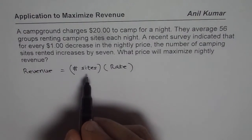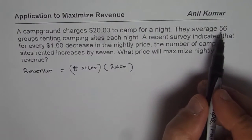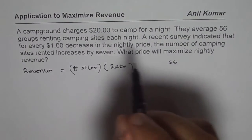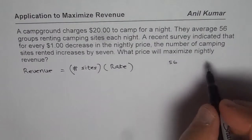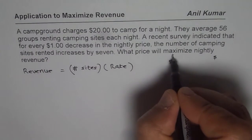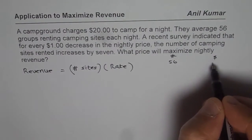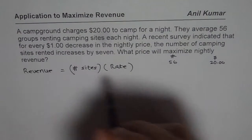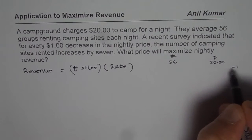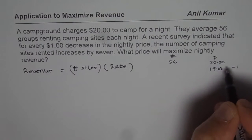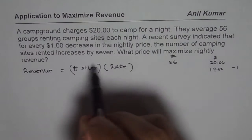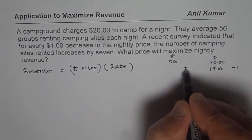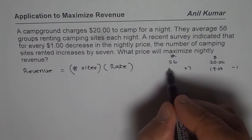As far as the number of sites are concerned, we know it averages 56. So the number of sites rented is 56 if the dollar amount charged is $20. Now, for every $1 decrease — if I do minus 1, that means $19 — we can rent out 7 more sites, so it becomes 63.